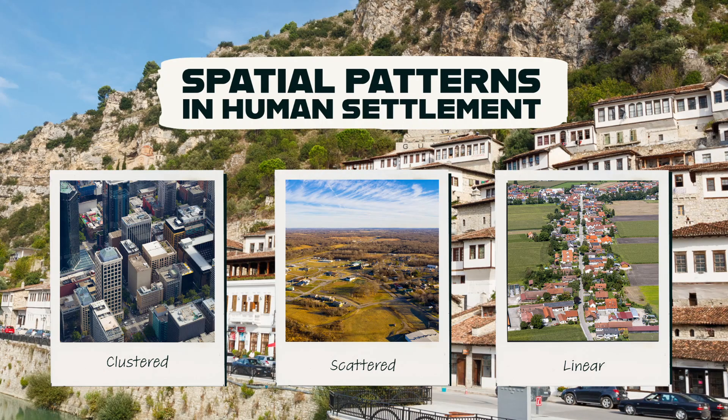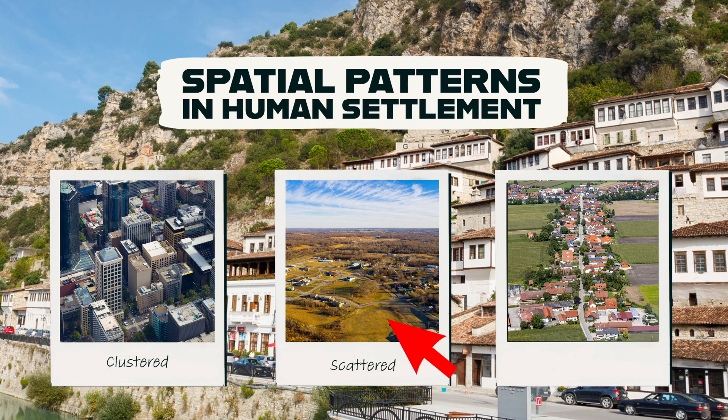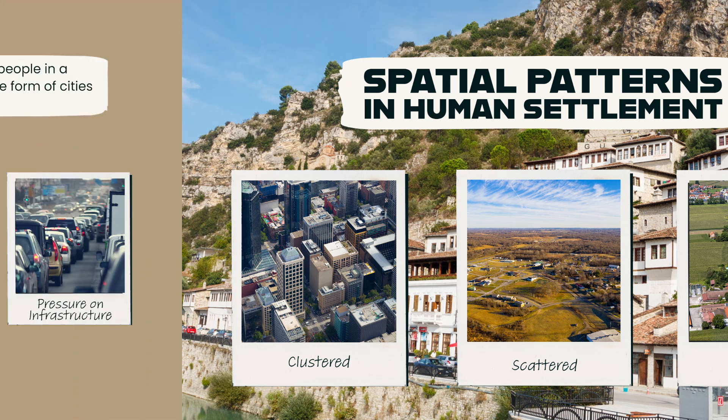There are three main types of spatial patterns in human settlement: clustered, scattered, and linear. Understanding these patterns can help us understand the forces that shape the way people live and their impacts on the environment.